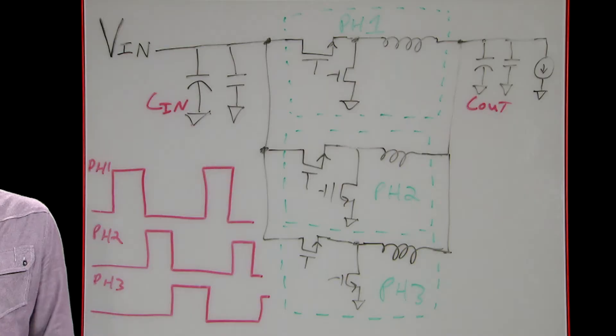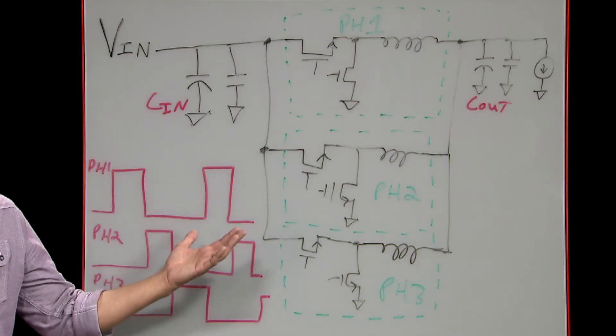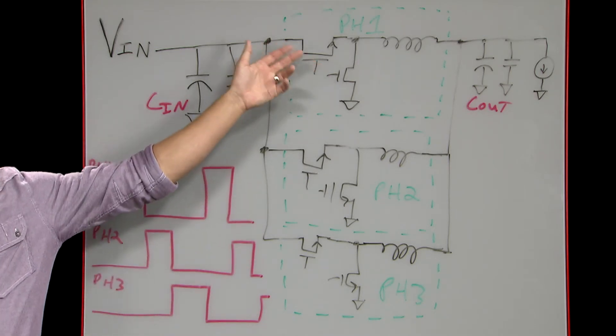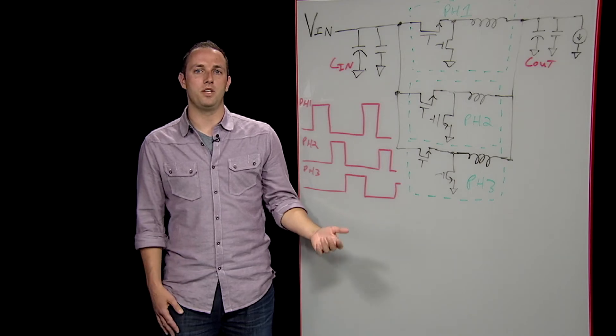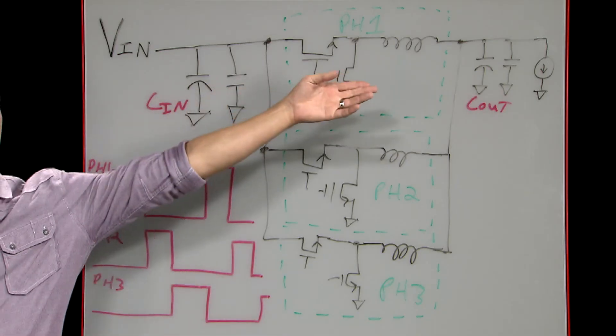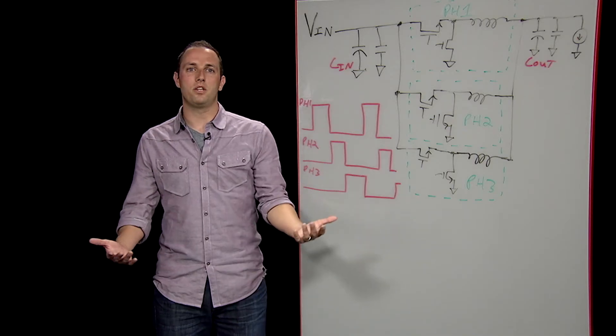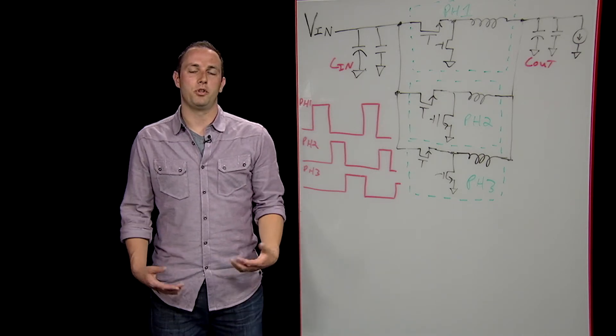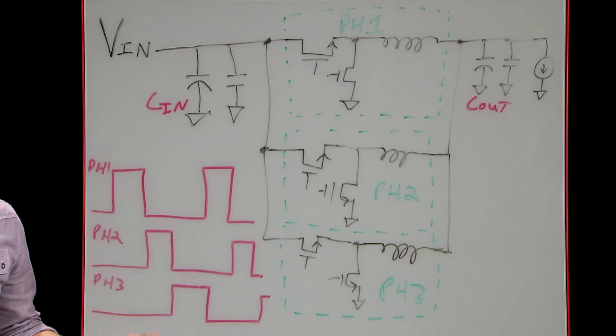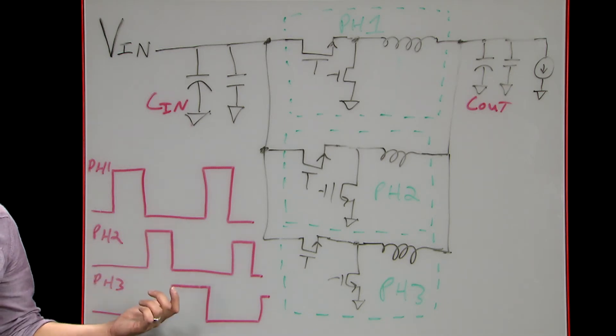So to start, what is a multi-phase buck regulator? Essentially, it's a parallel set of the buck regulator topology we're all familiar with, each phase with its own inductor and power MOSFETs. Collectively, these components are called the phase and all the phases share the same set of input and output capacitors. Each phase runs at the duty cycle of a standard single-phase buck during steady state, but the controller will fire off each phase at a spaced interval so that any given point only one phase is active.